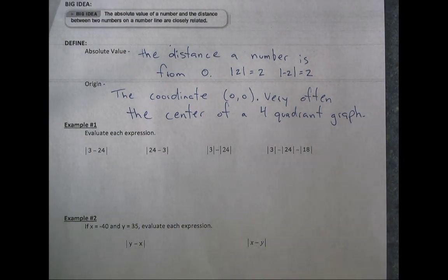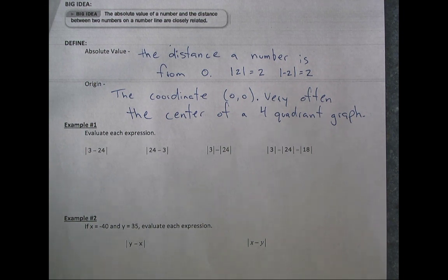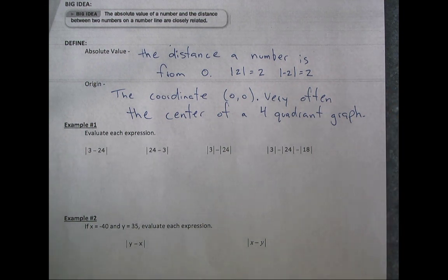Today is lesson 1-6, and we're going to be looking at absolute value and distance. The big idea for today is that the absolute value of a number and the distance between two numbers on a number line are closely related.